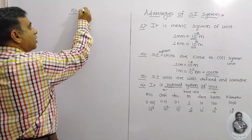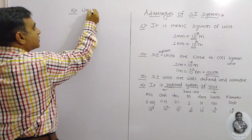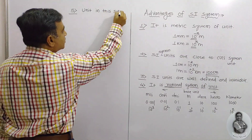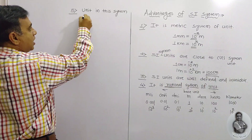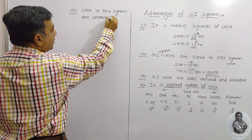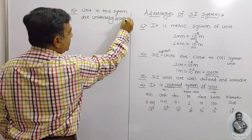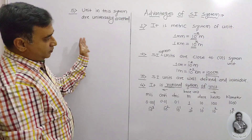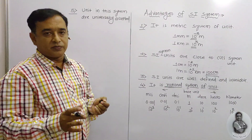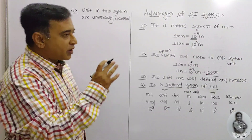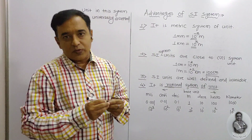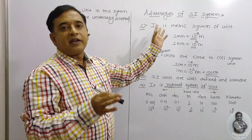The fifth advantage is that units in this system are universally accepted. All the units included in this system are accepted by all countries throughout the world. That is why this system is better than any other system of units.